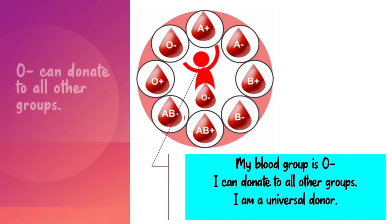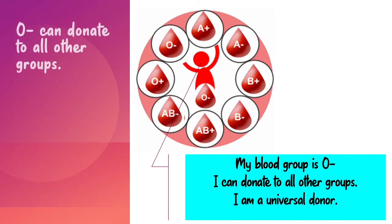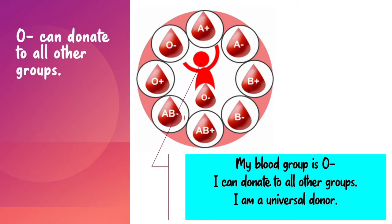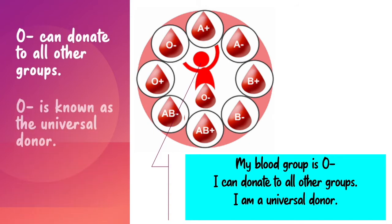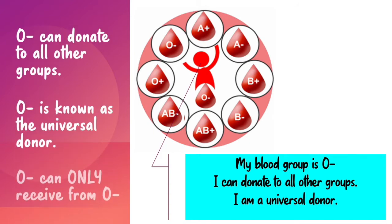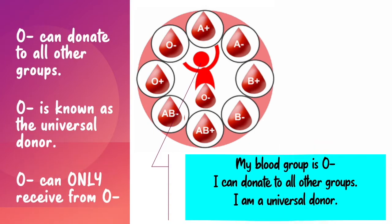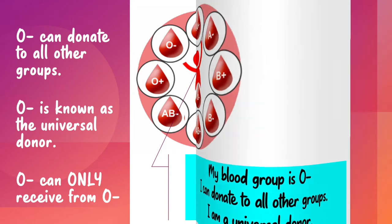O-negative can donate to all other groups. O-negative is known as the universal donor. O-negative can only receive from O-negative.